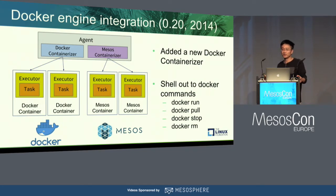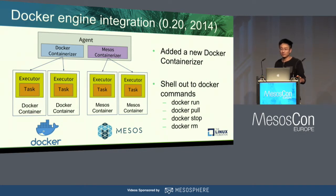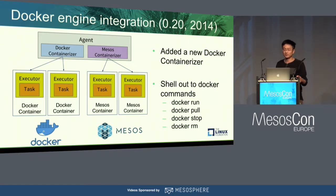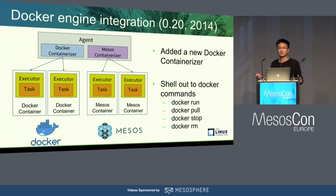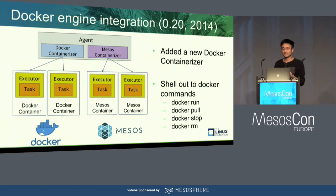Also in 2014, version 0.20, Docker was really popular, so we added a new containerizer called Docker containerizer. It launches containers not using Mesos container code, but by shelling out to the Docker daemon — Docker run, Docker pull, Docker stop, Docker rm. These two containerizers can coexist on the same agent, so you can have some containers running with Docker and some using the Mesos containerizer.